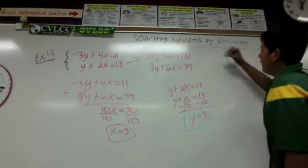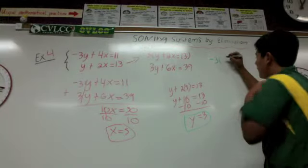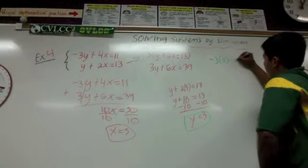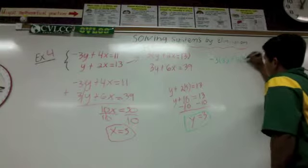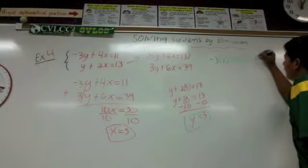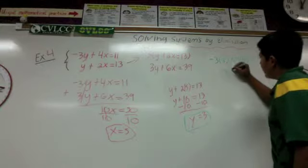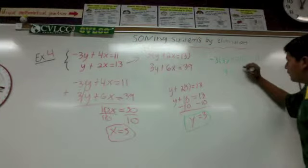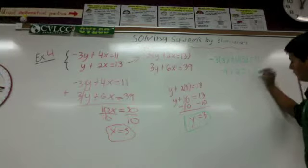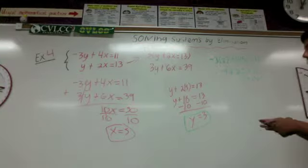For the first equation, we do negative 3 times y, which is 3, plus 4 times x, which is 5, equals 11. So negative 3 times 3 equals negative 9, plus 4 times 5 equals 20, and negative 9 plus 20 equals 11. So 11 equals 11, meaning that equation is true under these solutions.